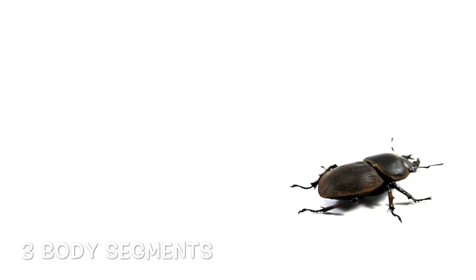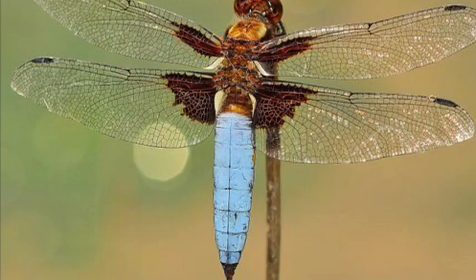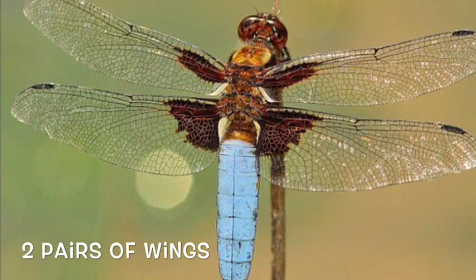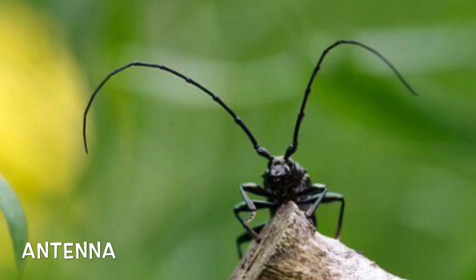They usually have two pairs of wings, although some insects don't have wings. They have antennae, and they have compound eyes.